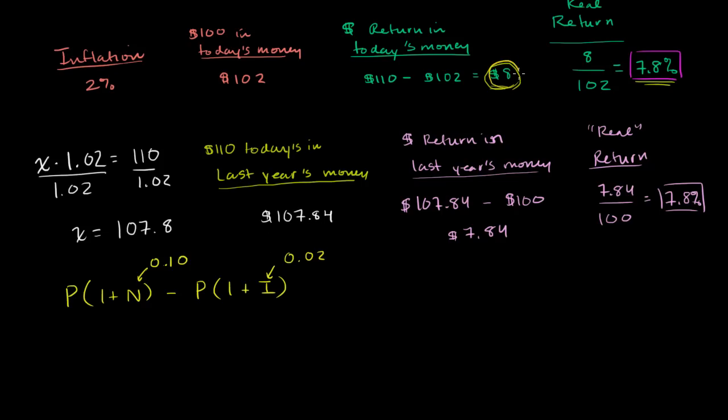So this expression right over here is actually the dollar return in today's dollars. It's this value right here that we calculated in the first video. And to calculate the real return, we want the dollar return in today's dollars divided by the investment in today's dollars. And once again, this is the investment in today's dollars. It's the amount we invested originally, grown by inflation. And this right over here gives us the real return.